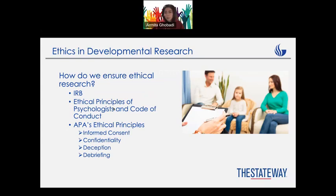The first one is informed consent, in which basically at the beginning of the study we're going to give parents or guardians a paper or document mentioning every step of the experiment. They're going to be informed about everything and can ask whatever questions they have. We'll provide our contact information so they can reach out whenever they want, and they are also free to stop participating at any possible step of the experiment.